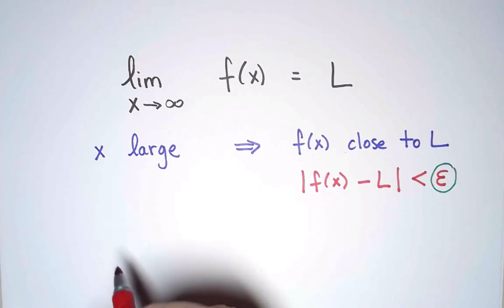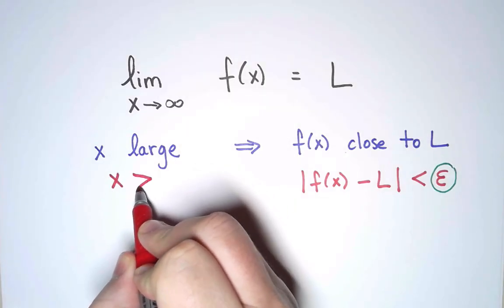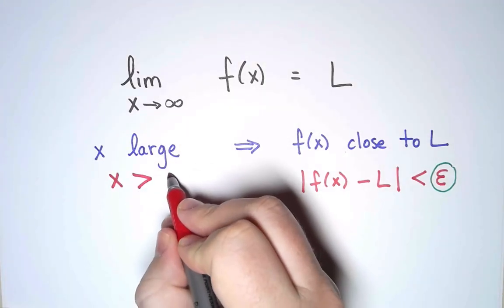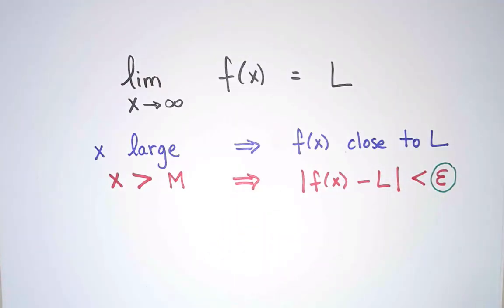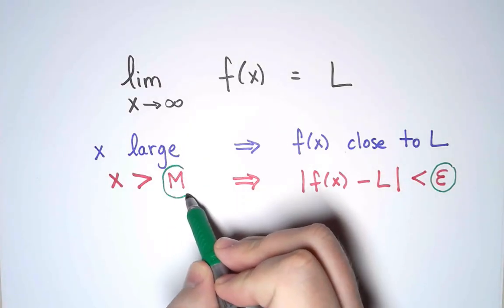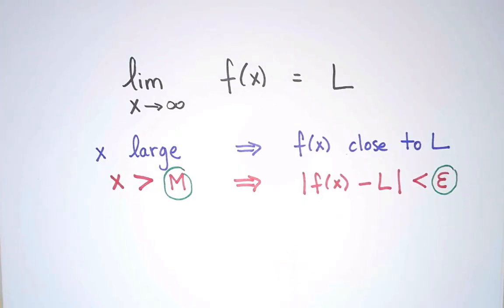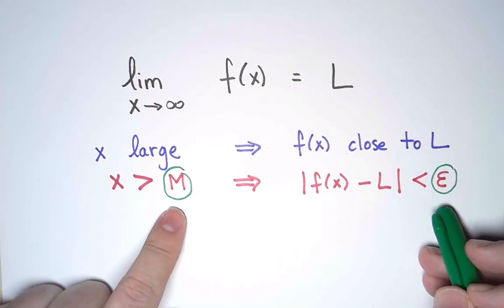On the other hand, to say that x is large, I am simply going to say that x is greater than some other cutoff, and I am going to call it M. So, if M is a large number and ε is a small one, then that is a way to rewrite this in terms of inequalities. But again, I am going to have to specify what I mean by M and ε.